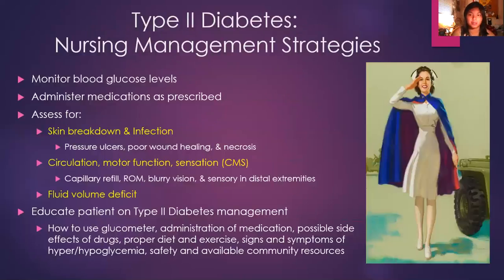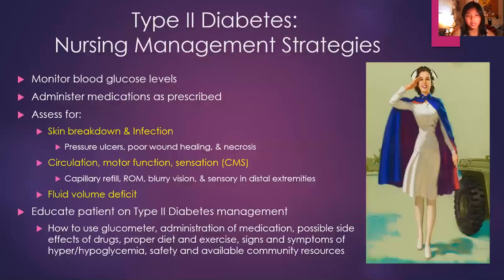Here are some nursing management strategies for our type 2 diabetic patient. We should always monitor blood glucose levels, administer medications as prescribed, and assess for skin breakdown and infections such as pressure ulcers, poor wound healing, and necrosis. We should also assess for circulation, motor function, sensations such as capillary refill, range of motion, blurry vision, and sensory function in distal extremities. Additionally, assess for fluid volume deficit because that can lead to further complications.